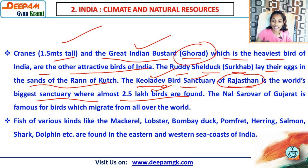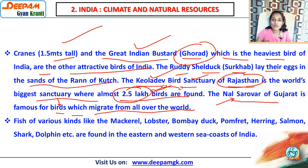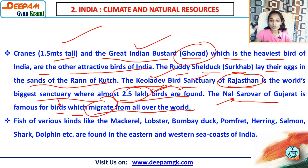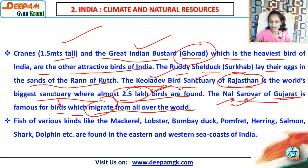The Nal Sarovar of Gujarat is famous for birds that migrate from all over the world. In winter, when temperatures in foreign countries go very low, birds migrate to India and come to Nal Sarovar in Gujarat, which is situated between Ahmedabad and Surendranagar.